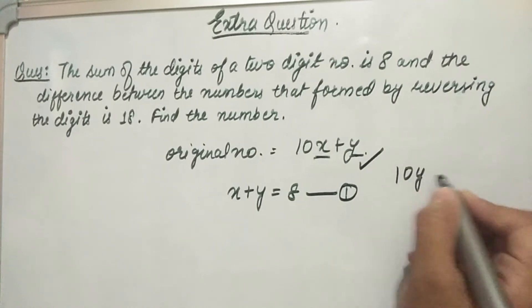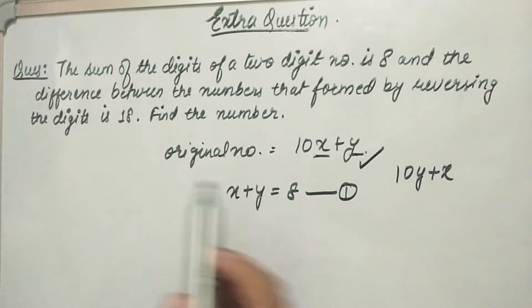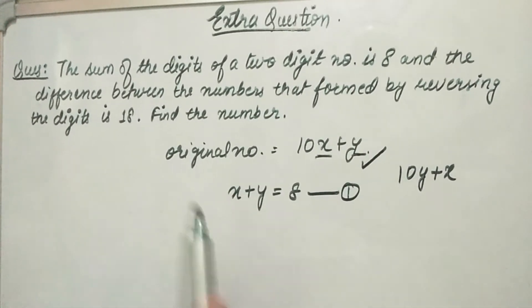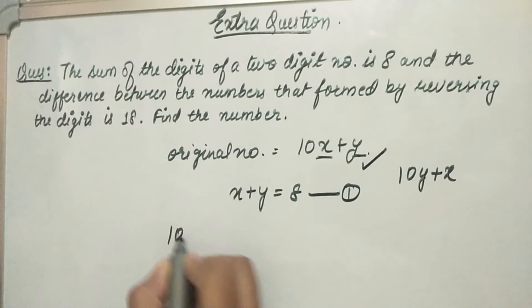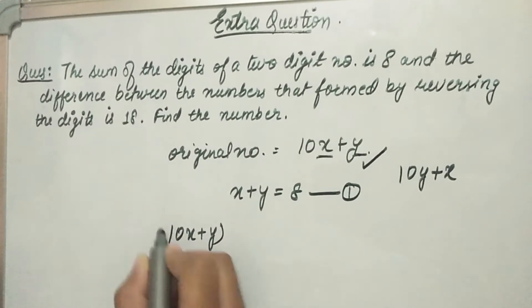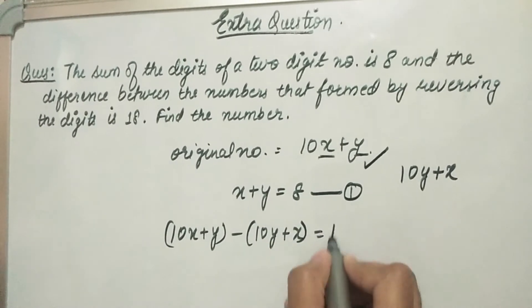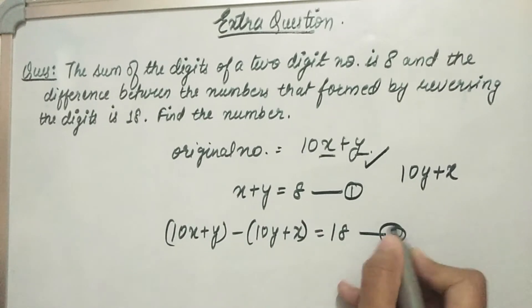then it will be 10y plus x. The difference of 10x plus y and 10y plus x is 18, so the second equation will be (10x + y) minus (10y + x) equals 18. So this is the second equation.